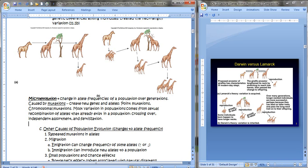Microevolution is simply a change in allele frequencies of a population over generations. This, of course, is caused by mutations, which would create new genes and alleles, for example, point mutations and whole chromosomal mutations. Most variation in populations actually comes from sexual recombination of alleles that already exist in a population. This occurs during crossing over or independent assortment. Remember, you've got 2 to the 23rd different combinations when you form gametes. And, of course, fertilization, where you have 2 to the 23rd times 2 to the 23rd when you consider the different gamete combinations and when they come together. So quite a bit of variation right there.